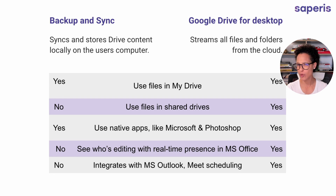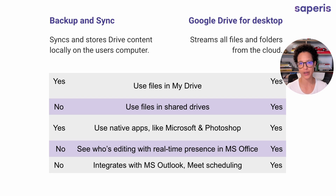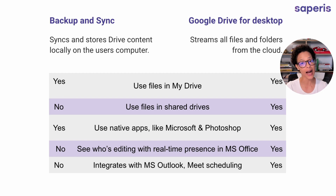Why would you even want to sync? This is super useful if you work with non-Google files. I'm a huge fan of Google Workspace, but Photoshop doesn't work within it. I still want to save my files to Google Drive as our main storage. So I use Google Drive for Desktop — when I double-click a Photoshop file in my Mac's Finder, it opens in Photoshop. The same is true for Microsoft Office if your organization still uses it. Both Backup and Sync and Google Drive for Desktop will handle these native apps.